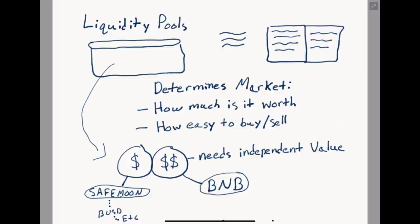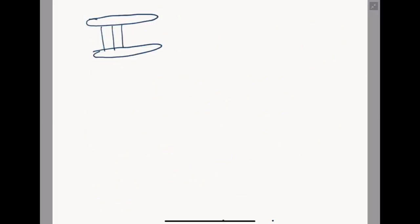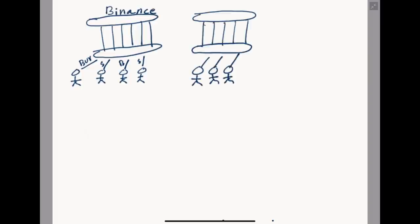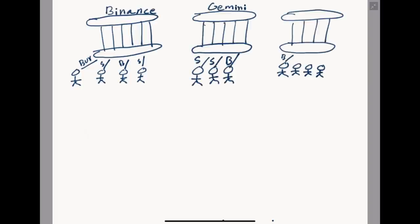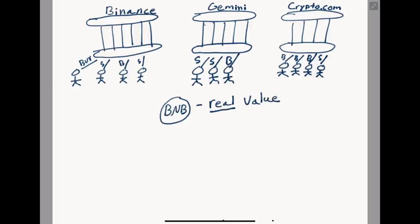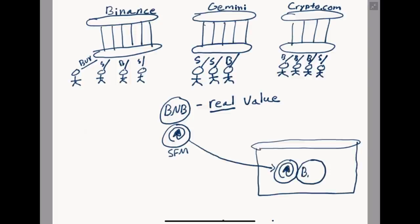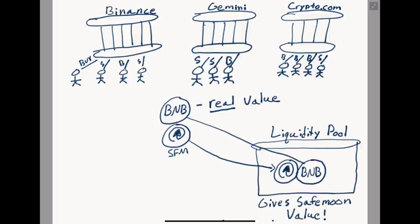The price of BNB will stay around the same between all of these markets due to arbitrage — and if you don't know what that word is, the link above goes to my video explaining it in more detail. The value of BNB is not determined by one market. The buys and sells on Binance will differ from those on Gemini or Crypto.com. This gives BNB a real-world value, so SafeMoon or any DeFi token on Binance's blockchain can put itself into a liquidity pool with BNB, using BNB's price to give the coin in question a value.